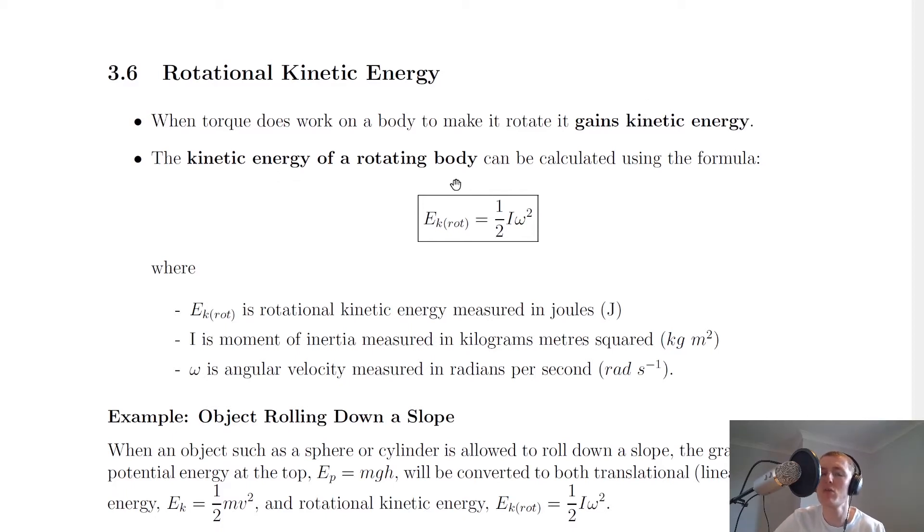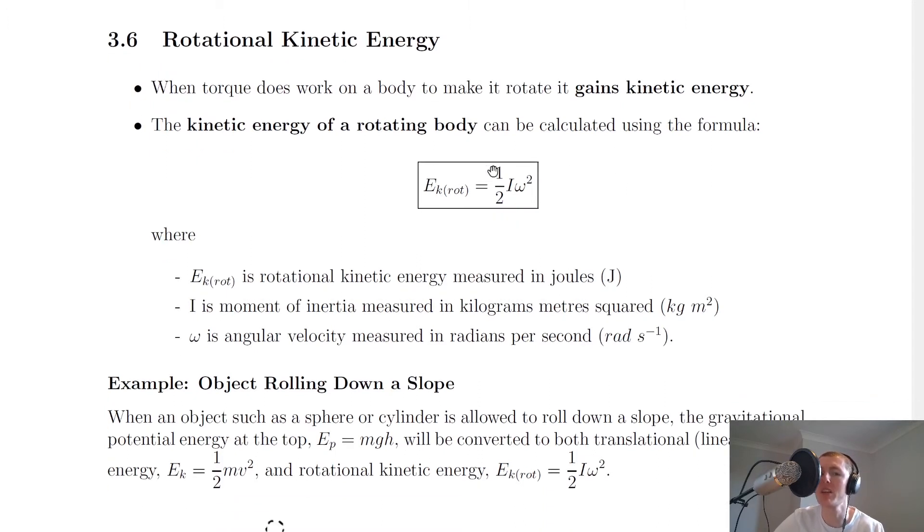Now the kinetic energy of a rotating body can be calculated using this formula here. So it's EK_rot, so I've just put the rot there. You could write rotational if you want to, just to make it look different from the classic EK = (1/2)mv². And this equals a half times I times omega squared.